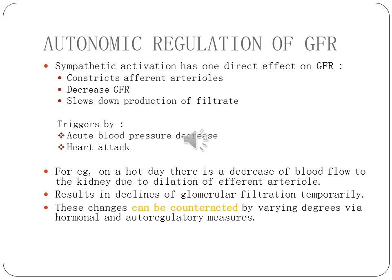Autonomic regulation of GFR involves sympathetic activation, which has one direct effect on GFR: it constricts the afferent arteriole, leading to a decrease in GFR and slowing down the production of filtrate. This regulation is triggered by acute blood pressure decrease and heart attack. For example, on a hot day, there is a decrease of blood flow to the kidney due to dilation of peripheral arterioles, causing a temporary decline in glomerular filtration. However, these changes can be counteracted by varying degrees via hormonal and autoregulatory measures.